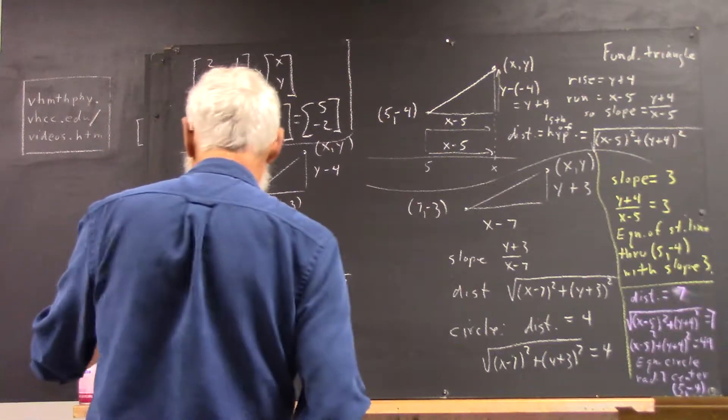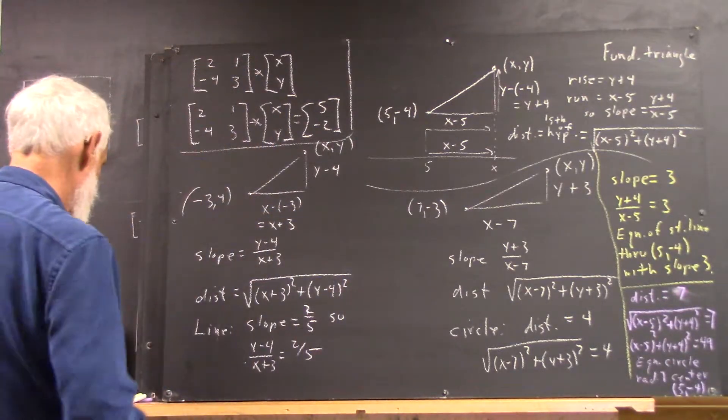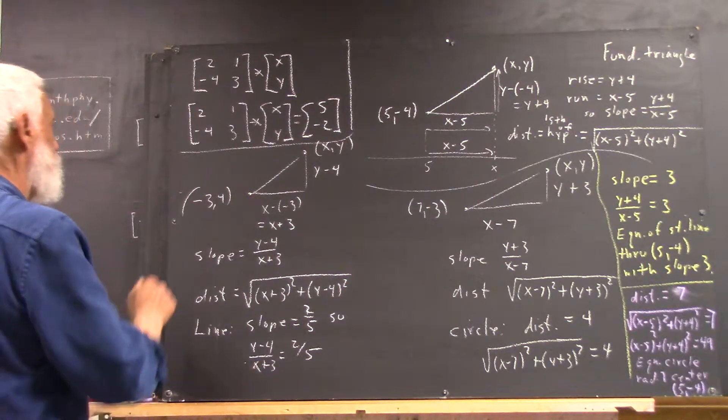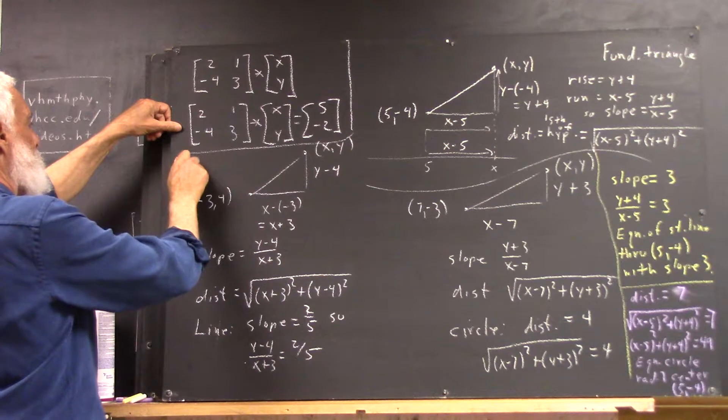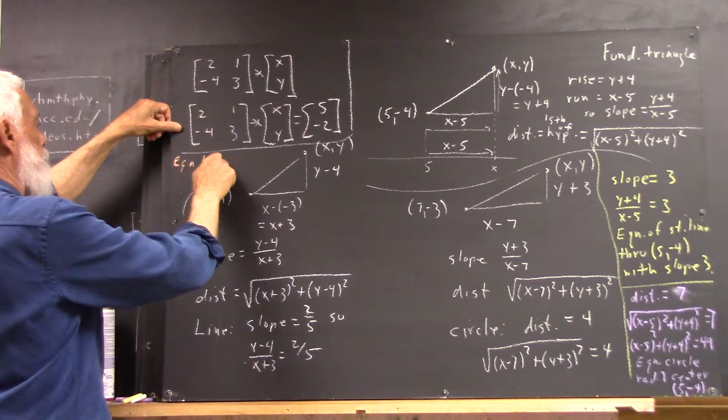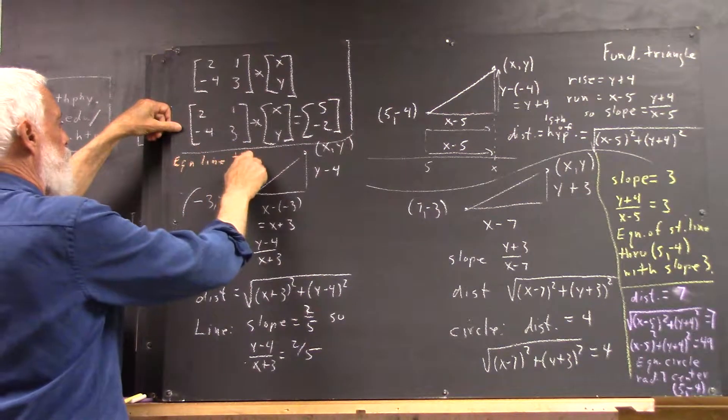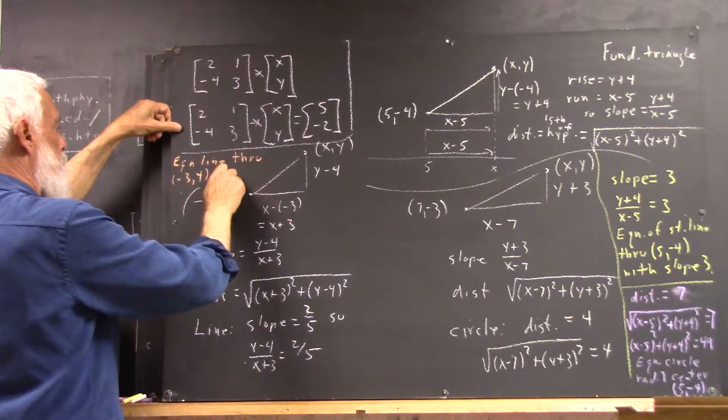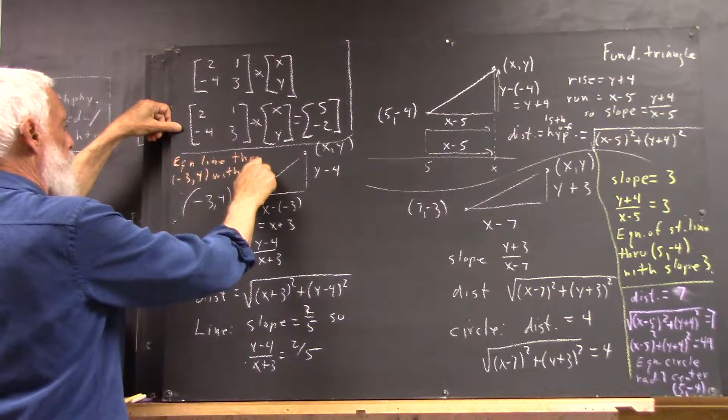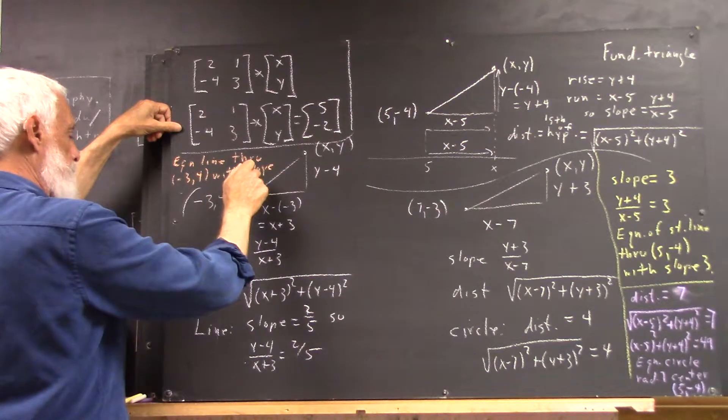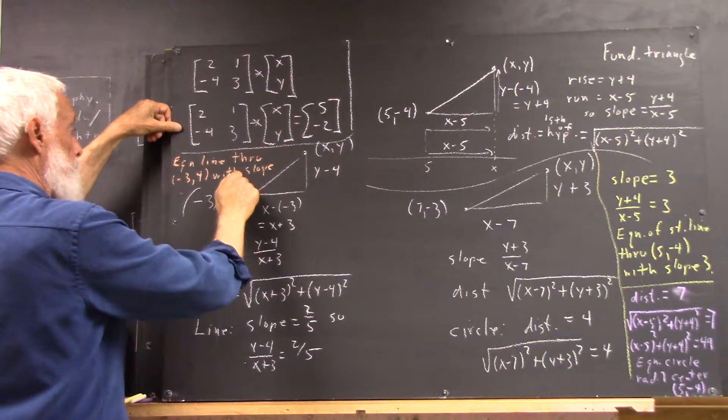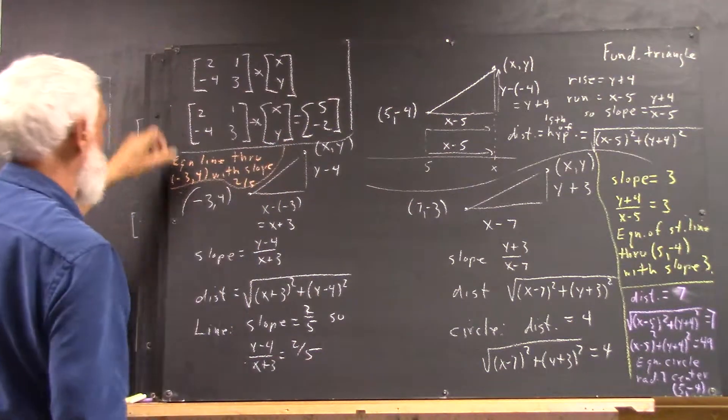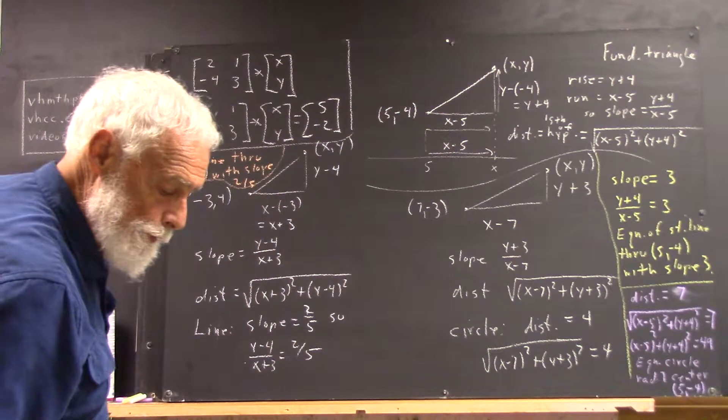Then, I asked everybody at the end to write down an equation of a line through negative 3, 4, with slope, what is it, 1 third, 2 fifths?